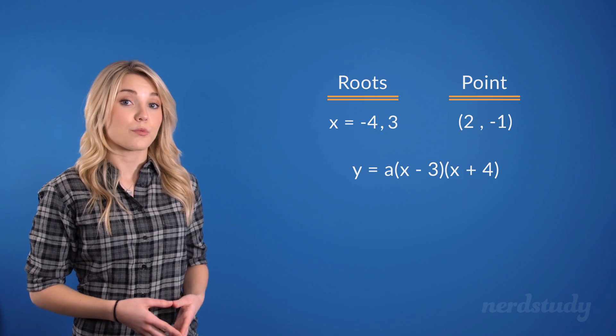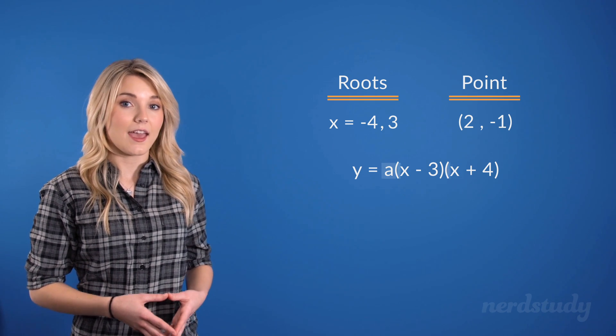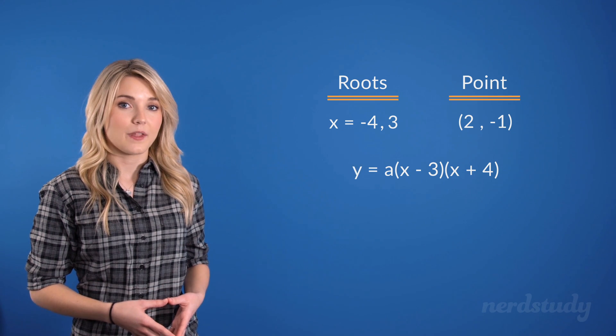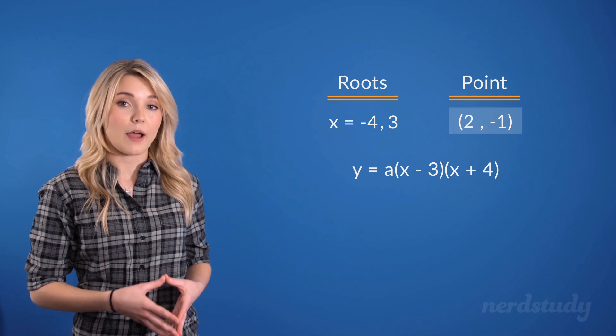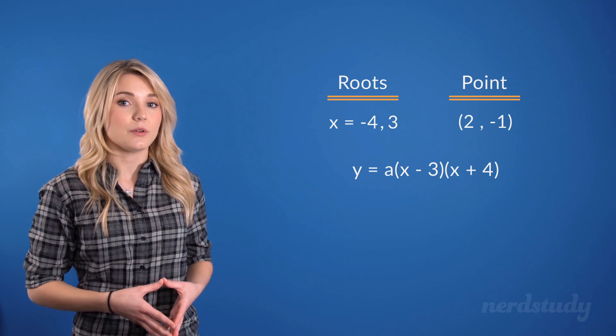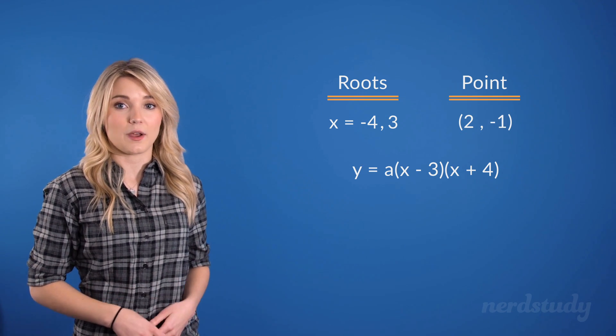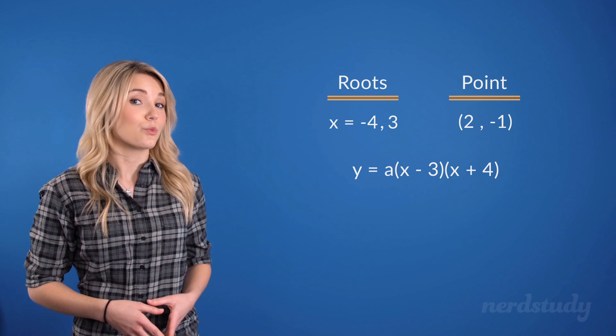Well, this equation now has three variables: an a, an x, and a y. And since we've been given a point on the parabola, if we were to substitute its x and y into this equation, we'd be left with just one variable, making it obvious what the value of a is.